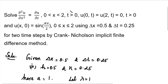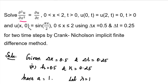Hi students. In this video, we will solve a problem using the Crank-Nicolson method. The question is: solve ∂²u/∂x² = ∂u/∂t, where x varies from 0 to 2 and t greater than 0. Boundary conditions: u(0,t) = u(2,t) = 0 when t greater than 0, and initial condition u(x,0) = sin(πx/2) where x varies from 0 to 2. Using Δx = 0.5 and Δt = 0.25, for two time steps by the Crank-Nicolson implicit finite difference method.